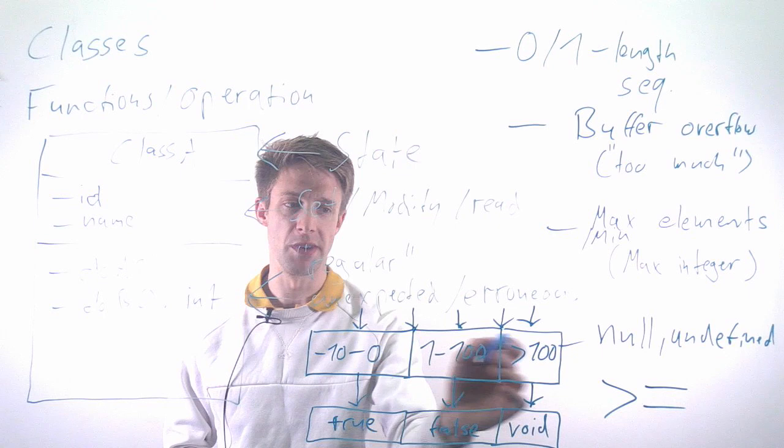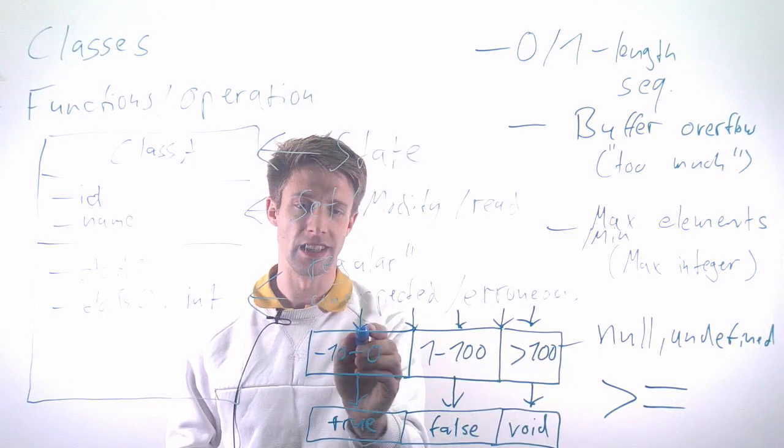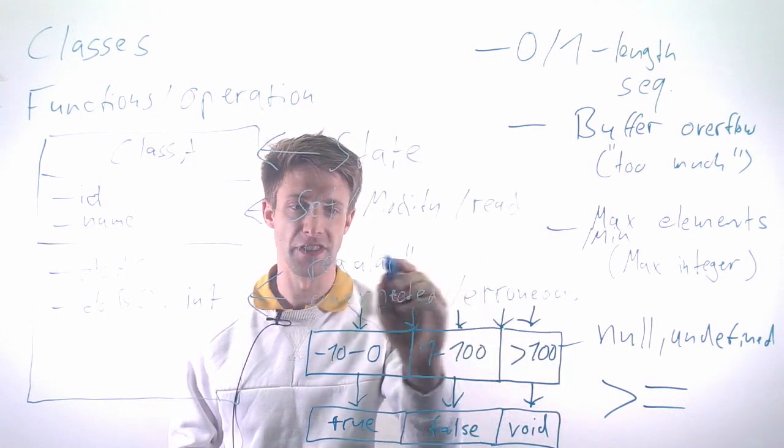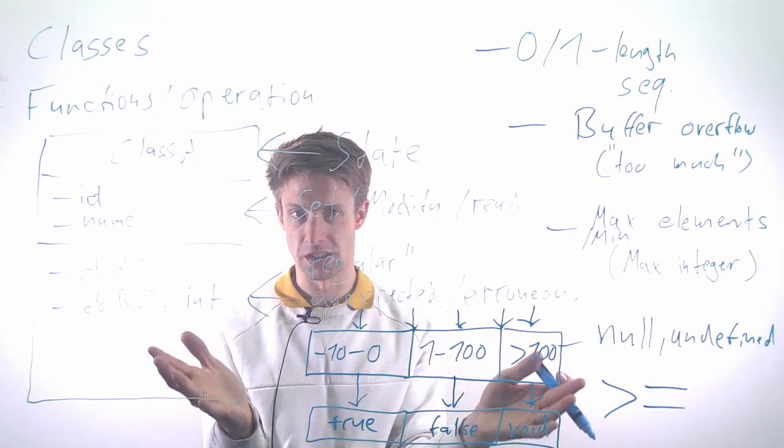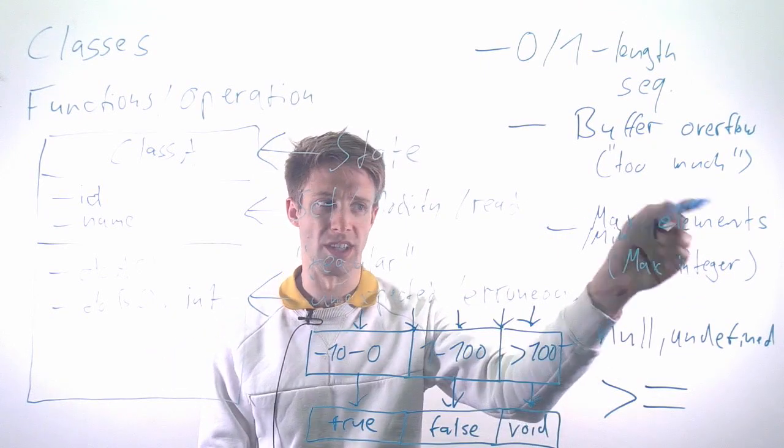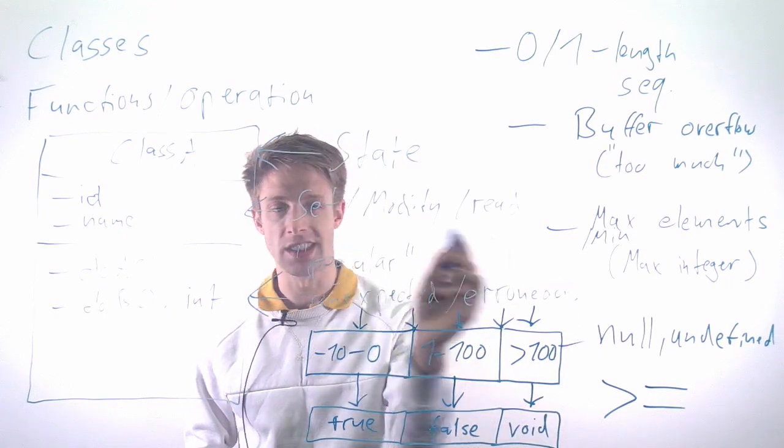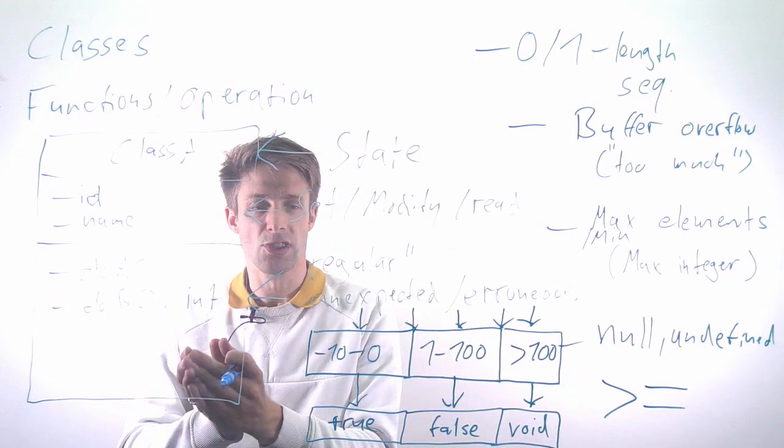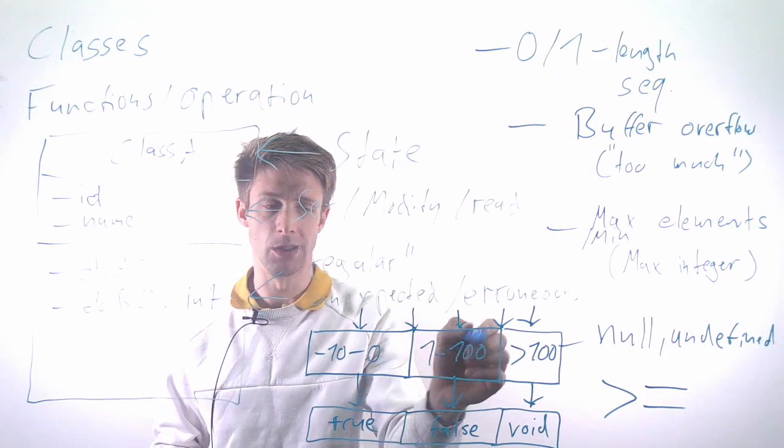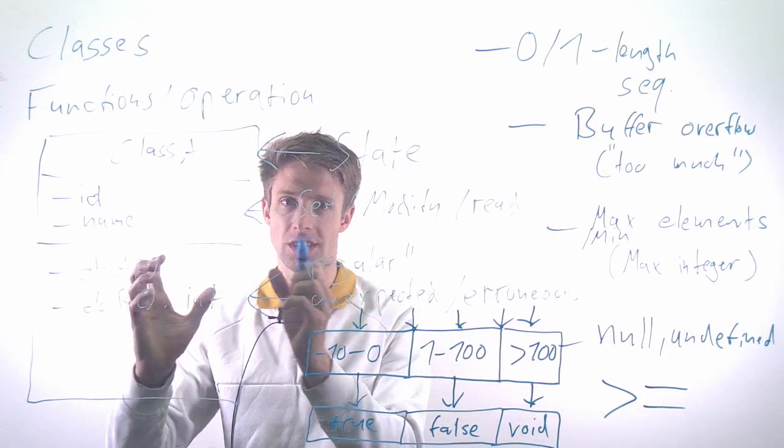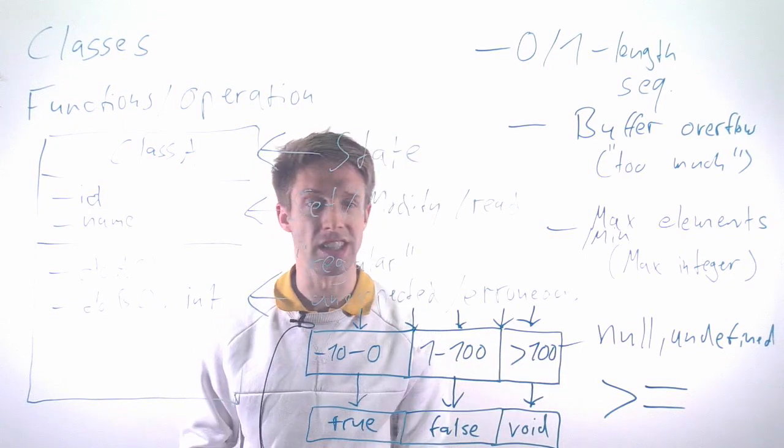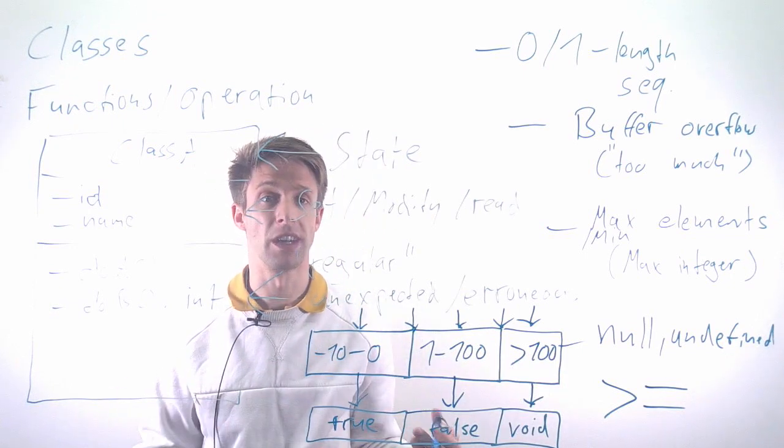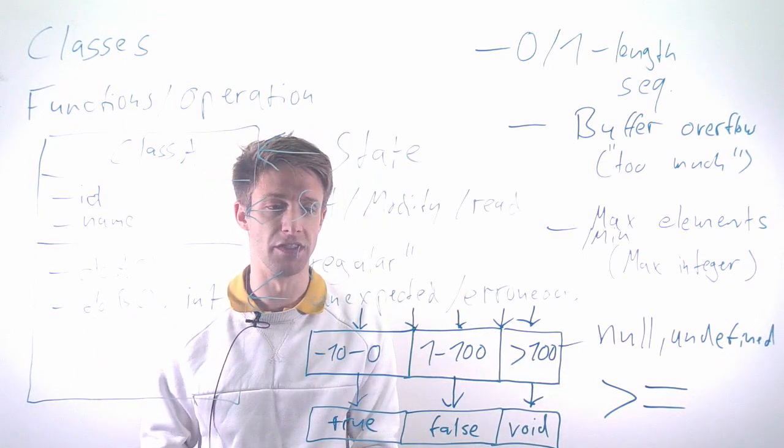You basically need to test three different values plus maybe the edge values, which is much fewer tests. That's a strategy if you can apply it by discretizing, breaking down your input space into boxes, into different classes. Of course, the integer case is very easy. It might be trickier with a string as input or a number of different parameters.